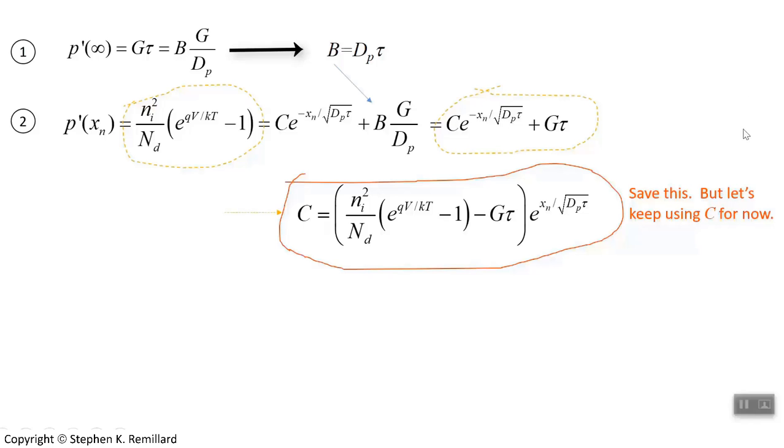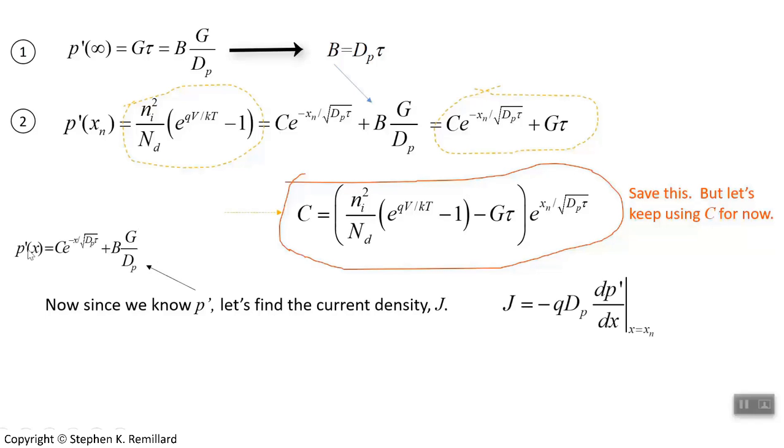So for now we'll just keep using c. We'll go back then to our current. Now, so we have our expression for p prime. For the time being I'm going to leave C just alone. If you take the derivative of p prime, you have the current. That's the diffusion current density, j, is that minus q D, the gradient of carriers. Take the derivative of this expression that we have now for p prime. Again, pause the video, make sure that if you differentiate this with x, you have this.